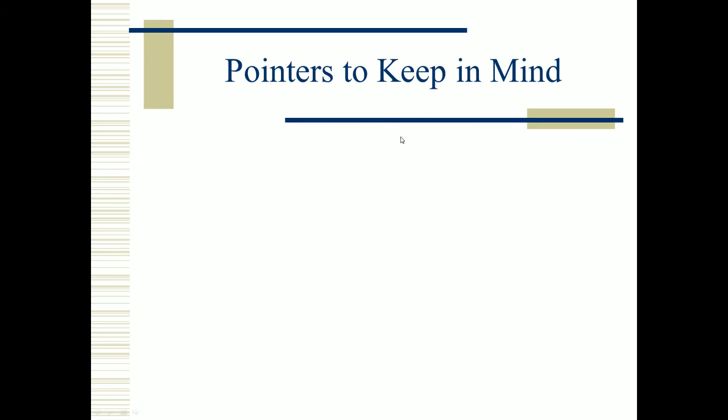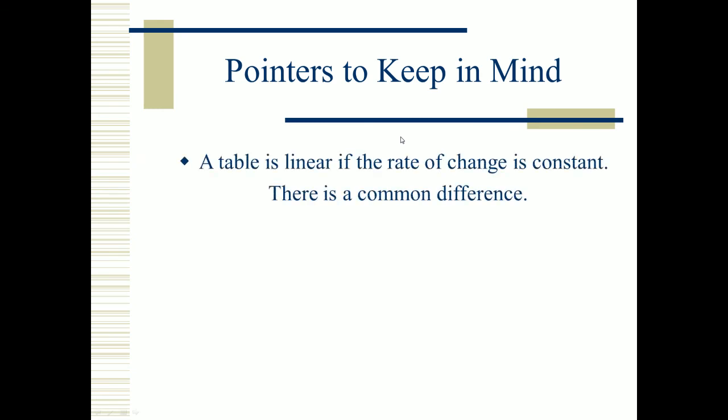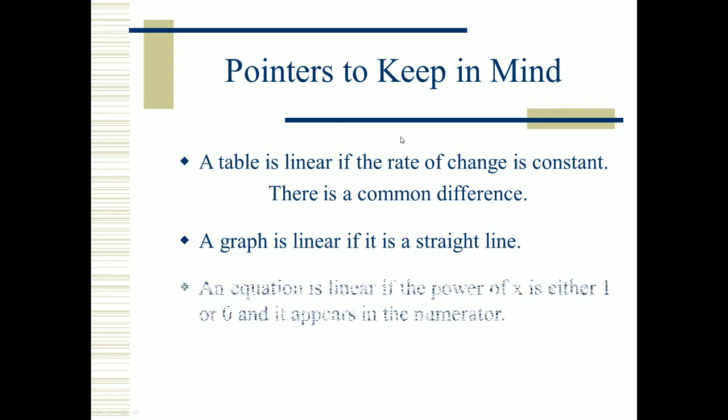To wrap this up, here are some pointers to keep in mind. A table is linear if the rate of change is constant — there's a common difference and a constant slope. A graph is linear if it is a straight line. An equation is linear if the power of x is either one or zero and x appears in the numerator.